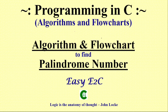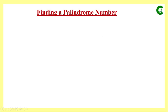In today's class we will learn how to find whether a given number is a palindrome number or not. First we have to know what we mean by a palindrome number. If we are given a number and we look at it from the reverse side, and if the number still looks the same — meaning the digits are still in that same sequence — then that number will be considered a palindrome.